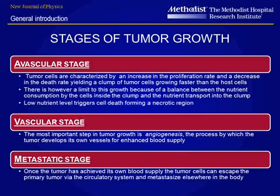We are interested here in the avascular stage, where we observe an increase in the proliferation rate of the tumor cells and a decrease in their death rate, yielding a clump of tumor cells growing faster than the host cells. There is, however, a limit to this growth because of the balance between nutrient consumption by the tumor cells and the nutrient transport into the clump. Low nutrient level triggers cell death and results in the formation of a necrotic region.